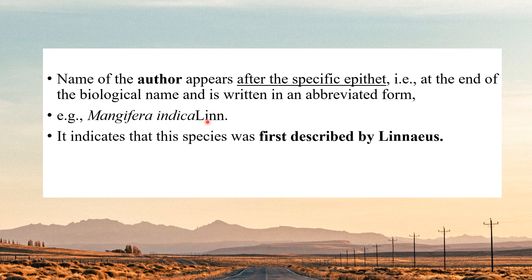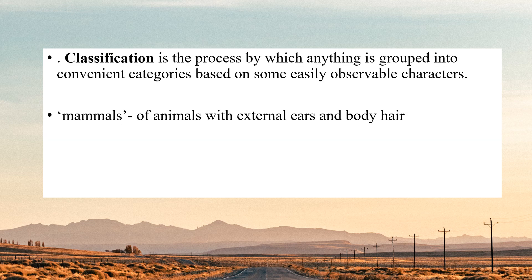If the author's name appears, it comes after the specific epithet, and it is abbreviated — only the abbreviated form 'L.' or 'Linn.' is written, not the full name. NCERT's definition: classification is the process by which anything is grouped into convenient categories based on some easily observable characters. It is important that classification is based on easily observable characters.